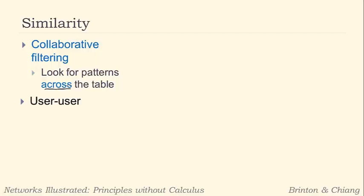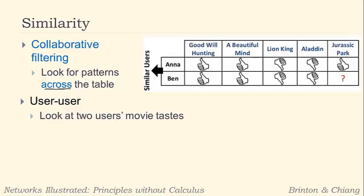First thing we'll look at is user-to-user. Let's just look at two users' movie tastes — say two users, Anna and Ben. There are four movies that they've both rated: Good Will Hunting, A Beautiful Mind, Lion King, and Aladdin. Good Will Hunting — Anna and Ben both gave a thumbs up. A Beautiful Mind — they both gave a thumbs up.